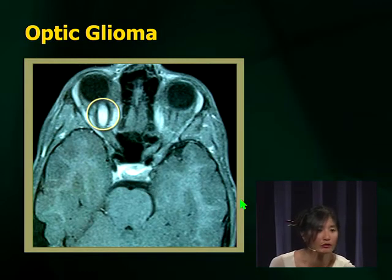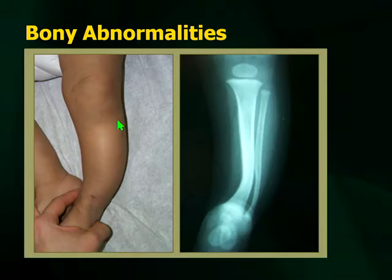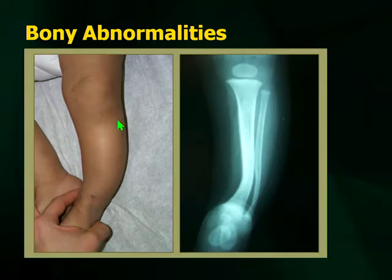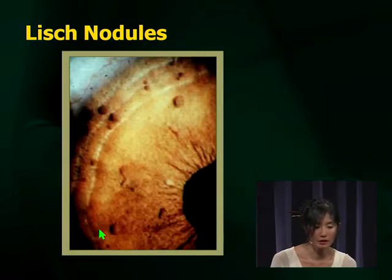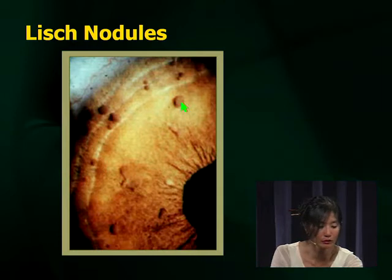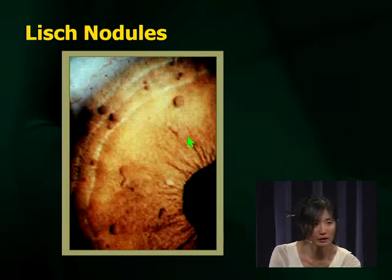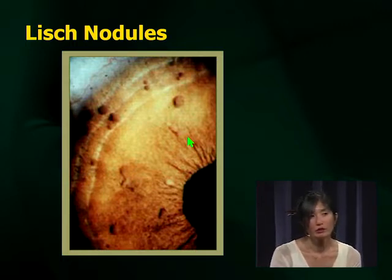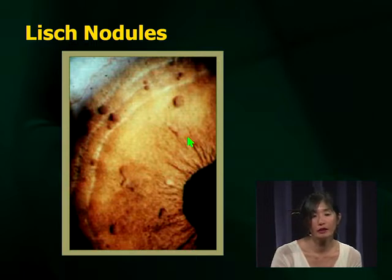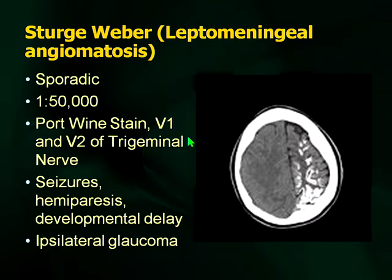Here's a picture of an optic glioma — a frequent association with NF1. Remember to watch out for bony abnormalities. Lisch nodules seen on slit lamp examination look like tiny neurofibromas in the iris — remember these only appear after about five or six years of age. When you get a question on neurofibromatosis, always involve an ophthalmologist — ophthalmology is a very important group to get involved.